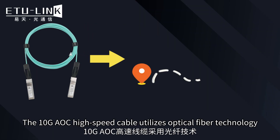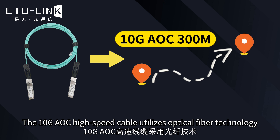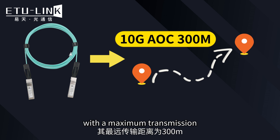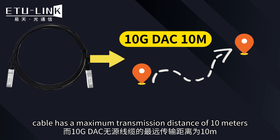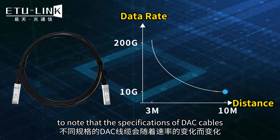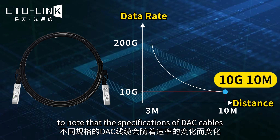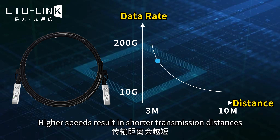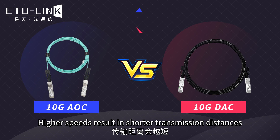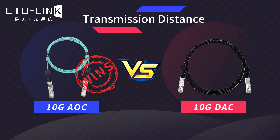The Tianji AOC high-speed cable utilizes optical fiber technology, with a maximum transmission distance of 300 meters, whereas the Tianji DAC passive cable has a maximum transmission distance of 10 meters. It is important to note that the specifications of DAC cables can vary depending on the speed — higher speeds result in shorter transmission distances. For transmission distance, Tianji AOC wins.